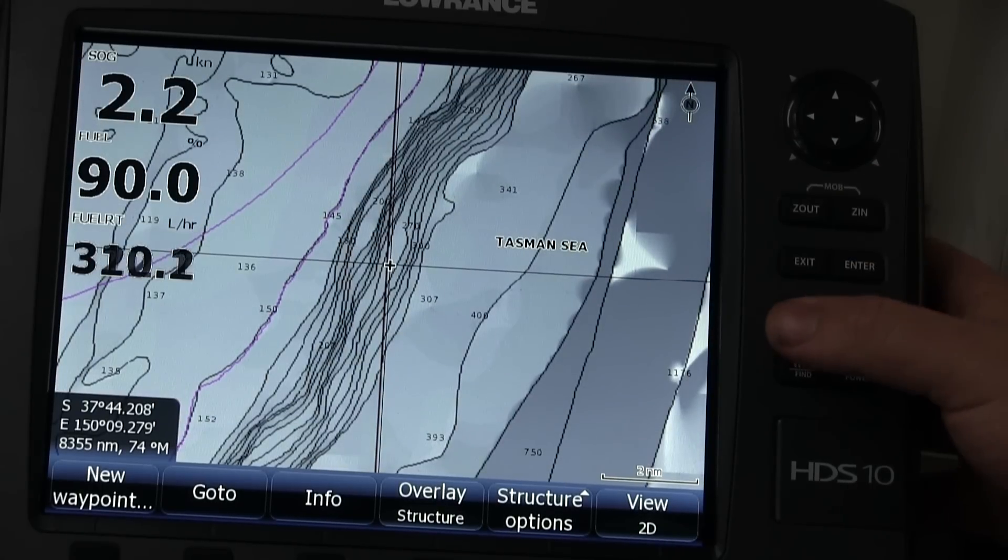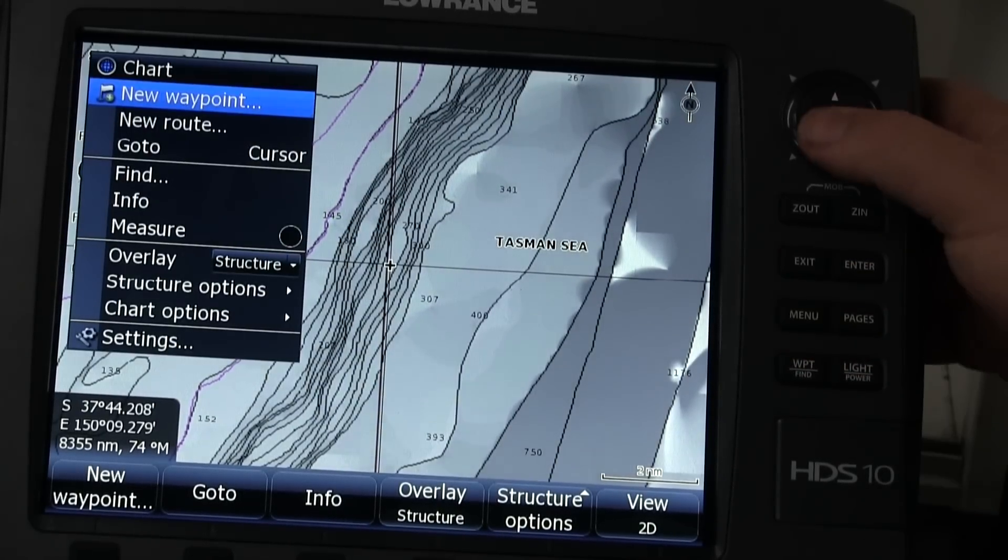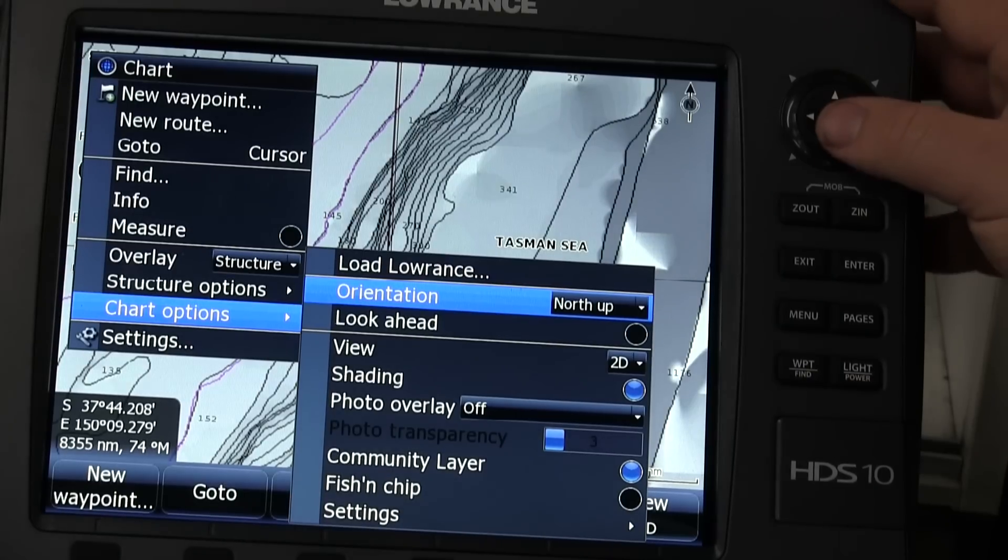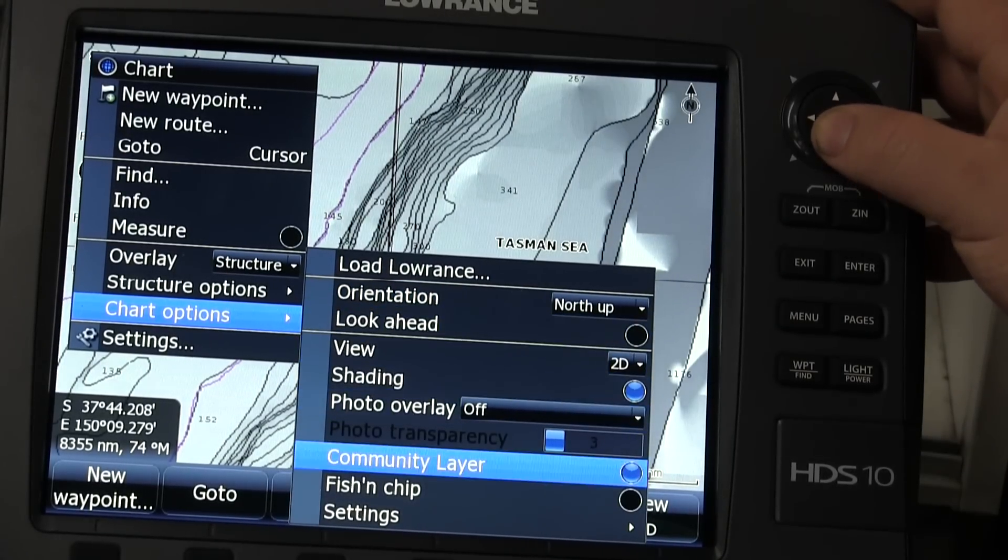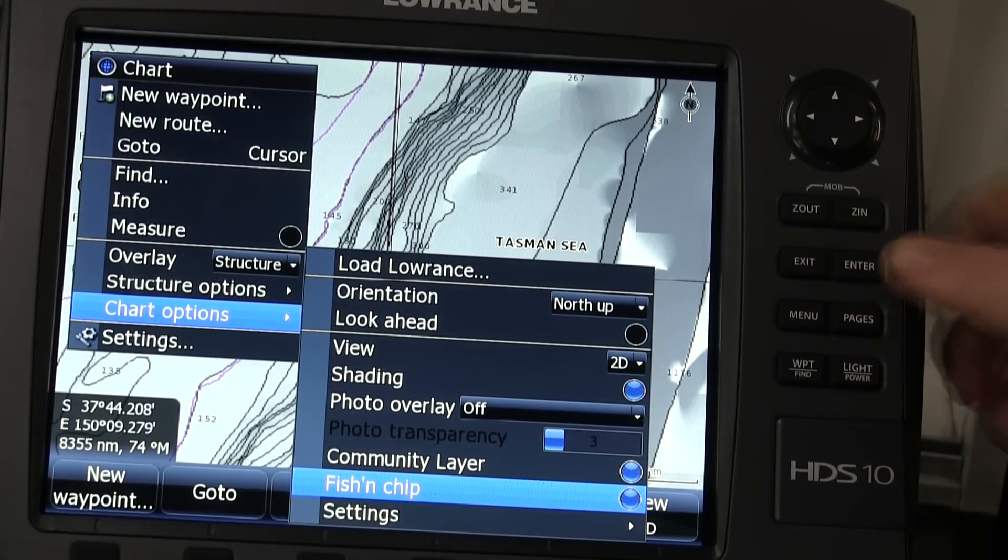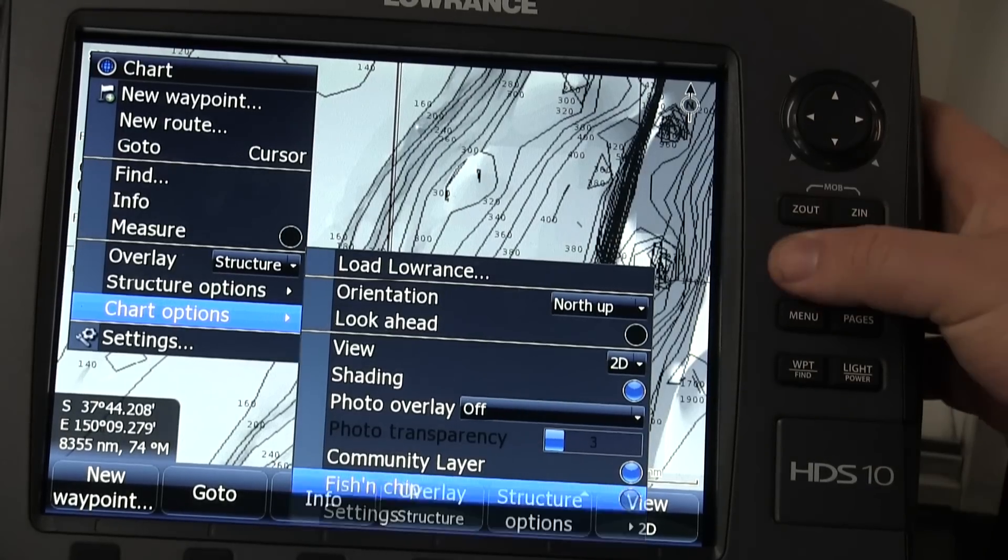Now what I'm going to do is enable the new data. The new data is described as fish and chips and it can simply be found in your chart options on the Lowrance, which is the same as the Simrad. Once we find fish and chips, we just highlight it, press enter and the new data is now live.